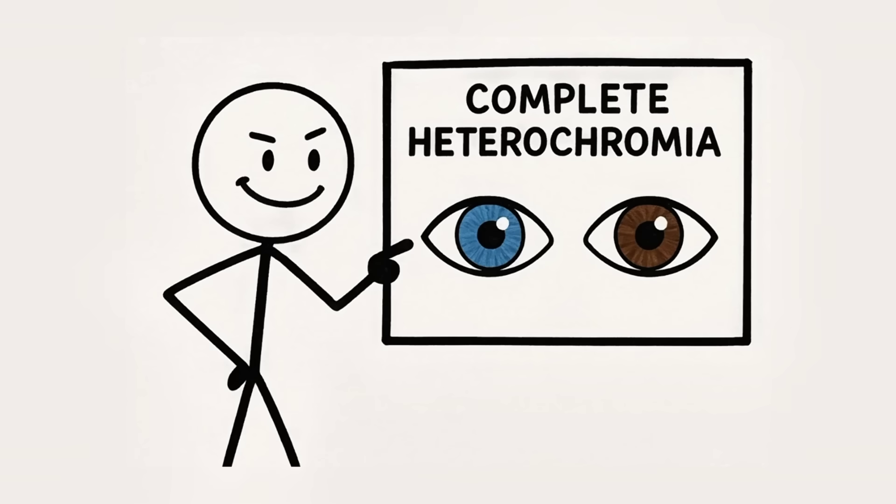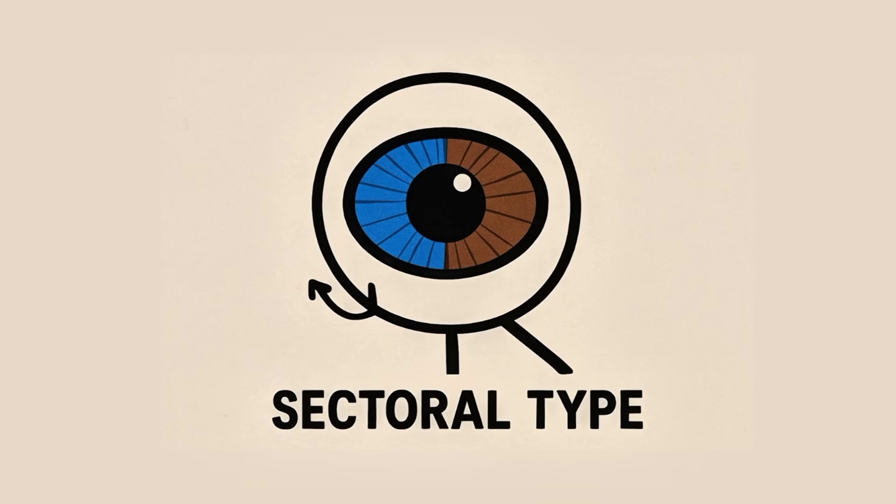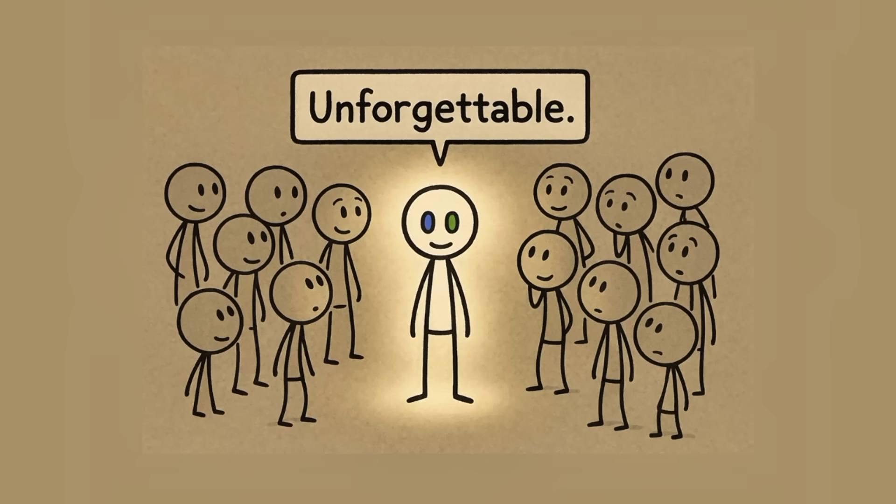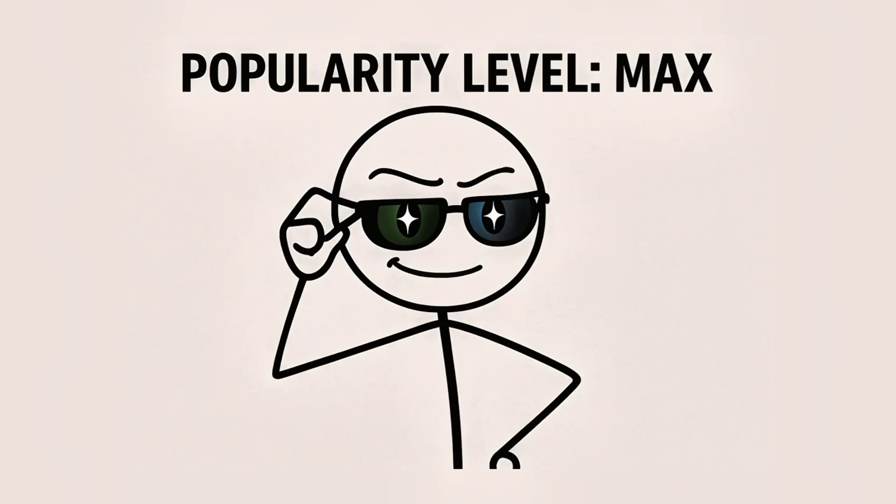There are different types. Complete heterochromia. Each eye, a totally different color. Sectoral heterochromia. One eye split like a pie chart. The advantage? You are a rare genetic mutation. You are unique. And people will always remember the interactions with you. Use this for your popularity advantage.